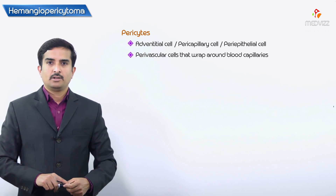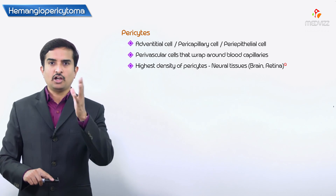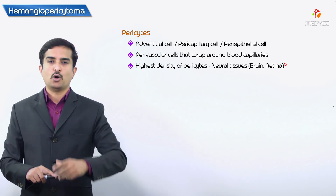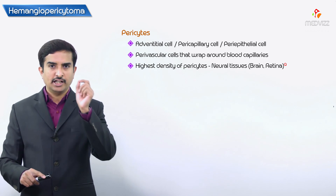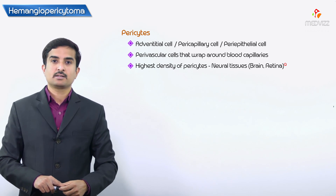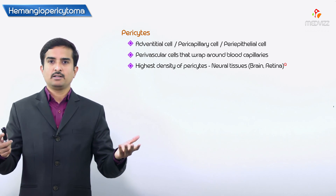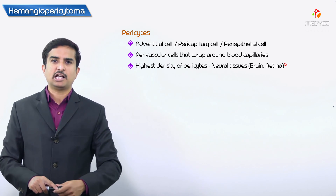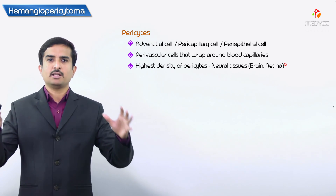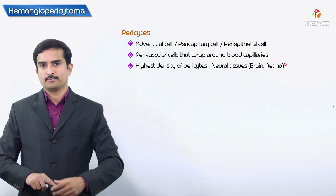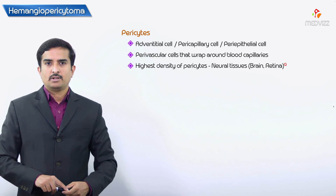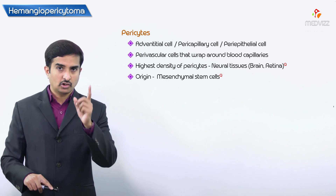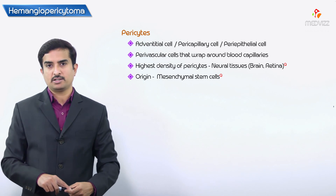The highest density of pericytes in the body is found in the vessels of the neural tissue, meaning the brain as well as the retinas. These are the most common anatomical locations where a large number of pericytes are seen. The origin from mesenchymal stem cells is also an important MCQ point.